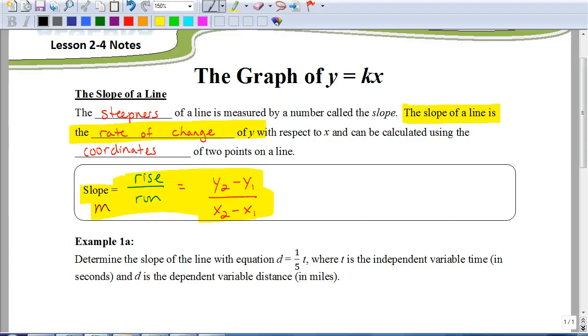Okay, so in this lesson we're going to be looking at the graph of y equals k times x. You should recognize that's an example of direct variation where our exponent for x is 1. So we're going to look at how the graph of that form relates to the slope.